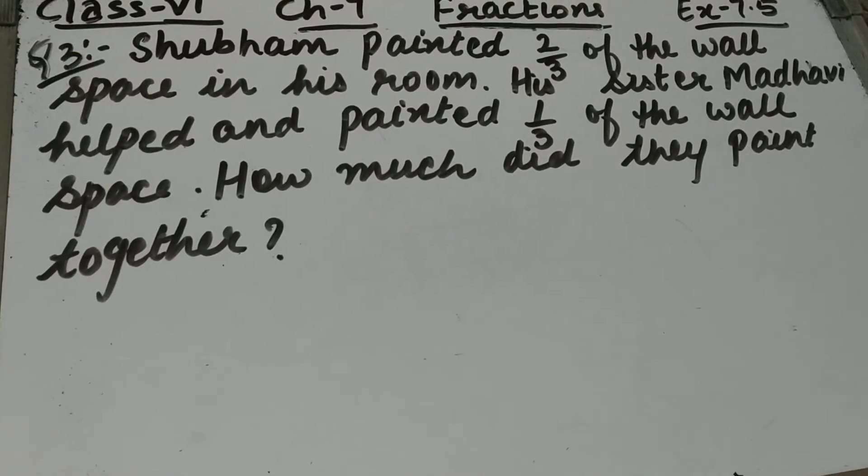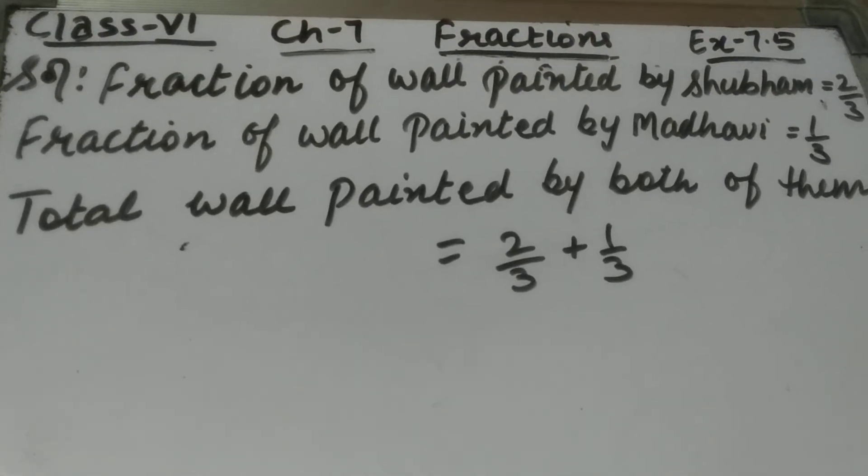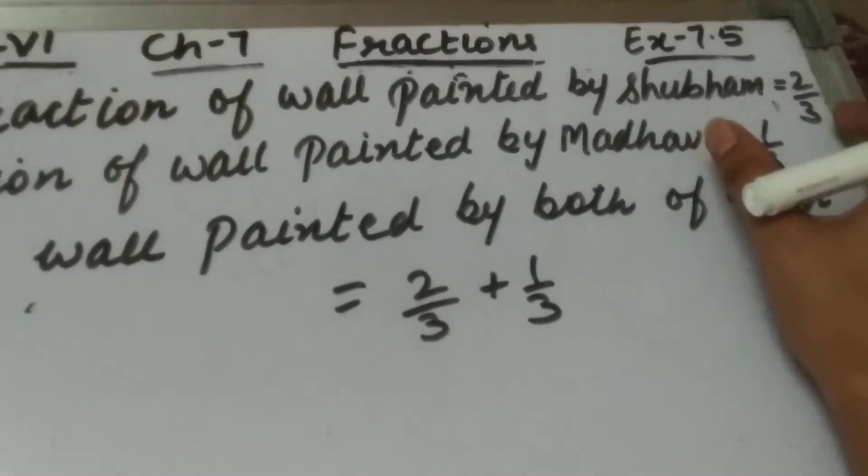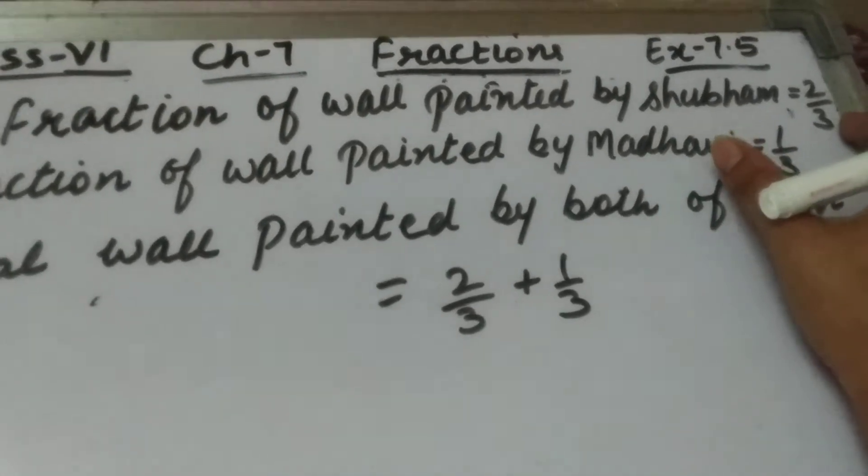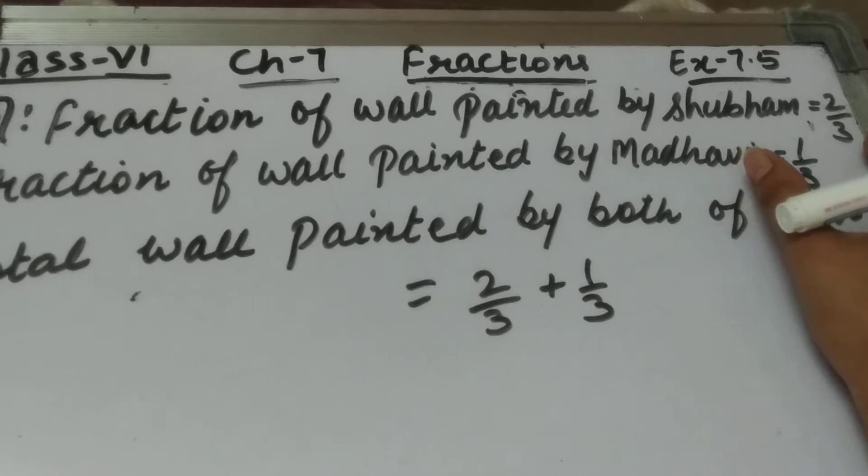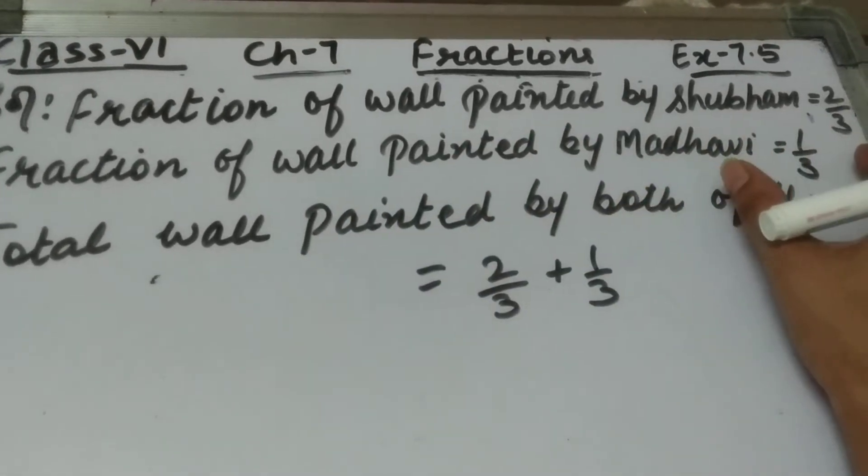We have to find out, so let's start the solution. Fraction of wall painted by Shubham is 2/3, because Shubham painted 2/3 of the wall. Fraction of wall painted by Madhvi is 1/3.